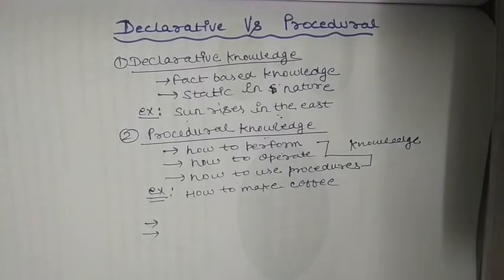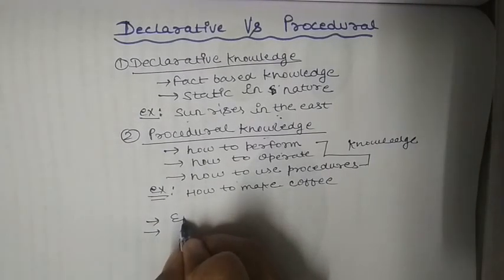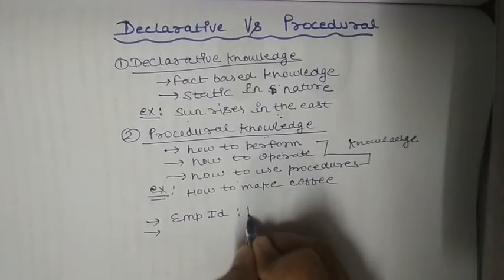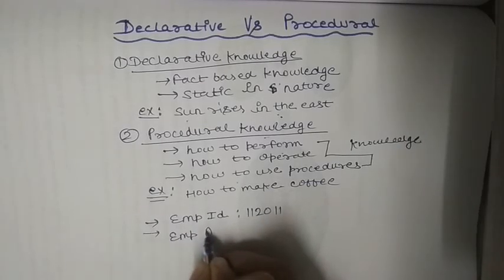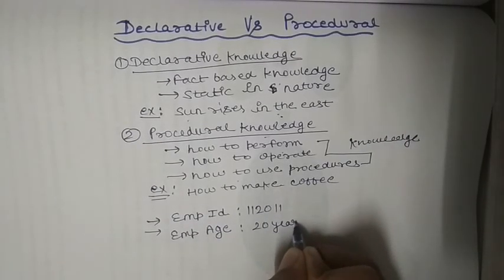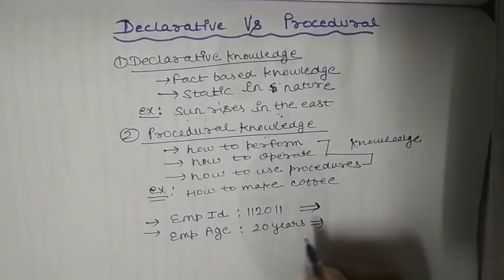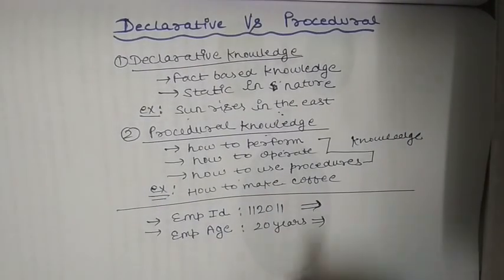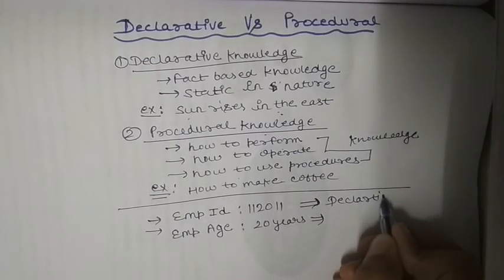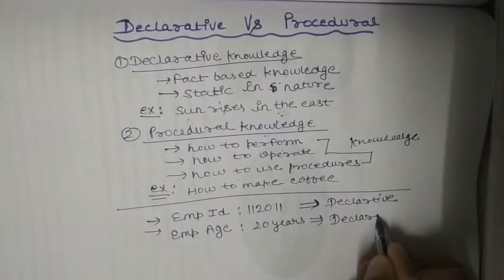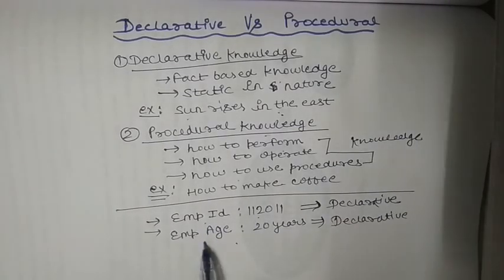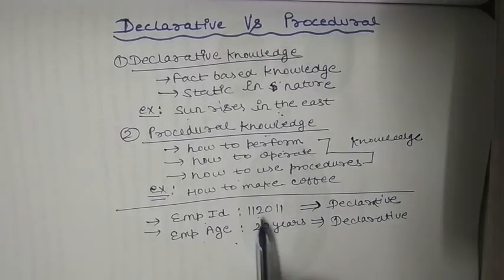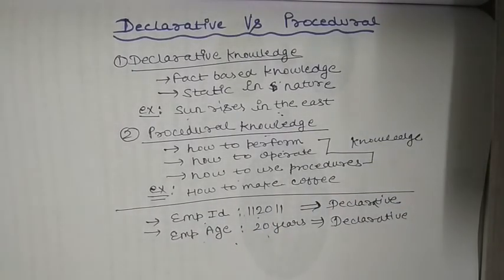Now I will give examples for both types. Suppose we have an employee ID like 11201 and an employee age of 20 years. You have to tell me whether this is declarative or procedural. This knowledge is declarative — we know the employee ID and the employee age, and it is stating in nature. For a specified time these things remain static — it is a fact.